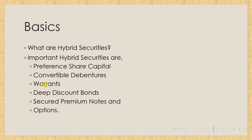Some of the important hybrid securities are preference share capital, convertible debentures, warrants, deep discount bonds, secured premium notes, and options. We'll go through each of them very briefly since it's an introduction, but in a later session we will have a full session on each of these items and discuss them in more detail.